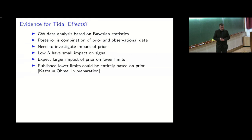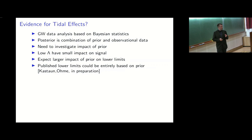An important question is whether there is actual proof for tidal effects — is there a reliable observational lower limit? Some studies have presented lower credible bounds, but since this is Bayesian statistics, the posterior combines prior assumptions with measurement data, and for low tidal deformability the prior impact is significant. Below a certain point, lower limits become entirely prior-dominated because low tidal deformability has lower impact on the signal. In an upcoming paper I will show arguments that these lower limits might be completely dominated by the prior. Additionally, for the universal relations study, some regions were excluded by construction.